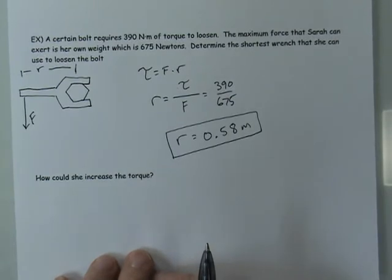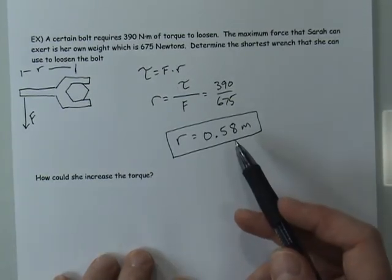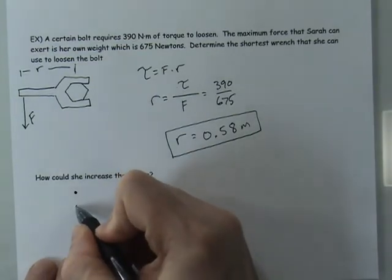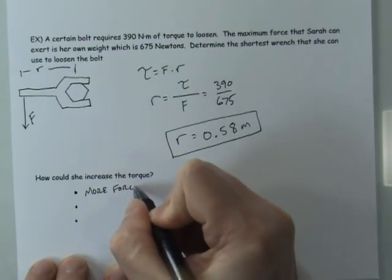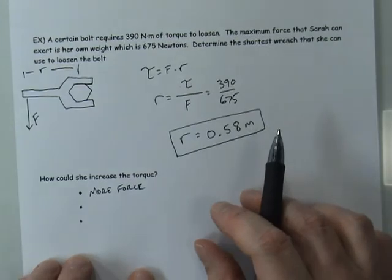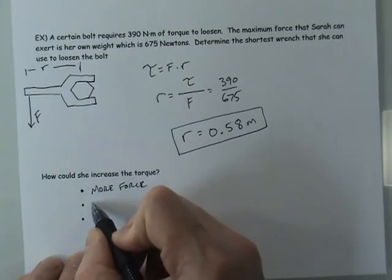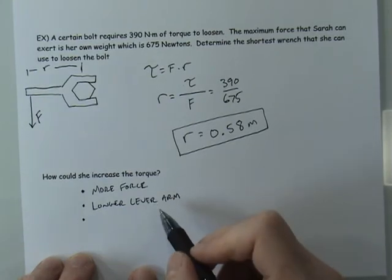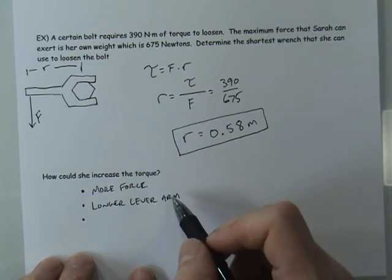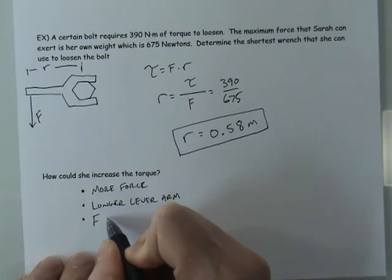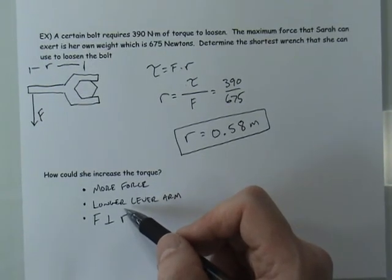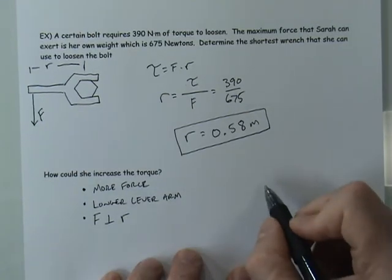A 60-centimeter wrench is more than half a meter stick — quite long, and most people probably don't have one. There are only three ways to increase torque: apply more force, increase the lever arm, or apply the force perpendicular to the lever arm. In this case the person is already at maximum force and already applying it perpendicularly, so the only option left is to increase the lever arm — for example, by using a pipe to extend the wrench handle.